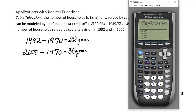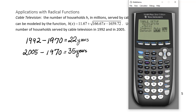Now that you've entered that in, go ahead and click second quit, and then we'll go to second table set. We want to make sure it is set to ask. This will allow us to decide what inputs we want and then be able to provide an output — the calculator can do that part.